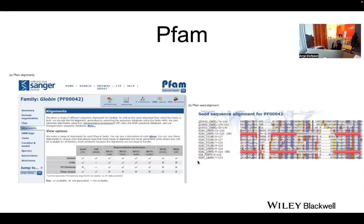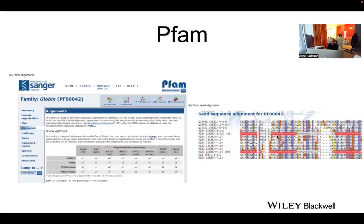Now, you've heard about Pfam — a database for protein domain families. One key concept is the seed alignment: for each family, there is a manually curated alignment containing all the important information. It's trimmed down, removing variable endings, but contains the most important features. You make an HMM profile model from the seed alignment and use that for searching the database to get the full alignment. For example, a seed alignment of 73 sequences for a globin family yields a full alignment of 6,000 proteins. The seed shows conserved positions and secondary structure elements.